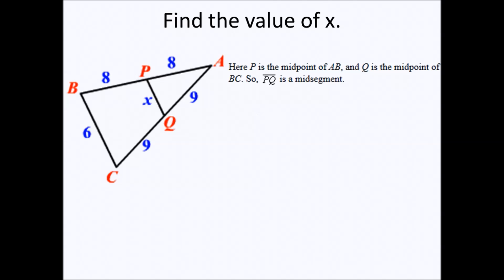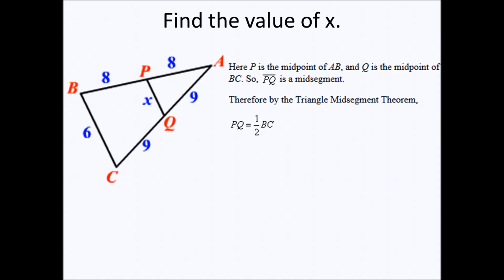P is the midpoint of line segment AB, and Q is the midpoint of line segment BC, so line segment PQ is a mid-segment. Therefore, by the triangle mid-segment theorem, line segment PQ equals one half of line segment BC. Substituting, PQ equals X and line segment BC equals six. Therefore, the rest becomes algebra: six divided by two equals three. The value of X is three.